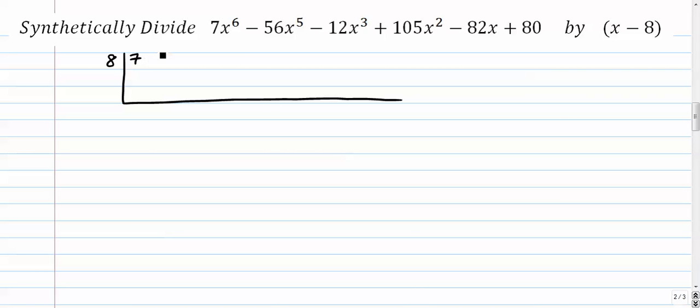7 goes right here. Negative 56 goes right here. And 5 and 3. Those are not consecutive. There's a fourth degree term that's missing. So I need to account for that by putting a placeholder.